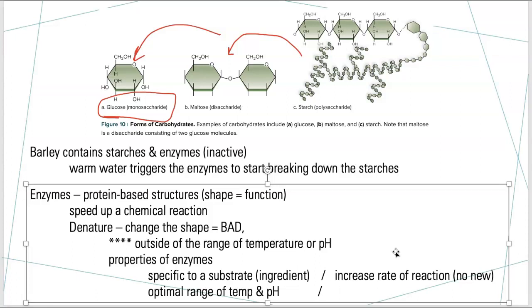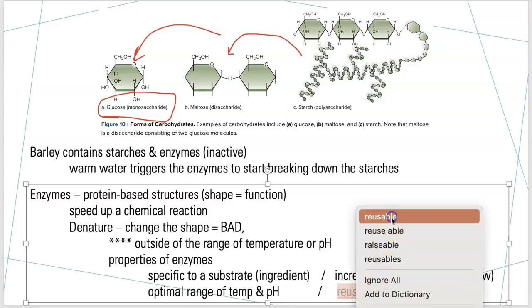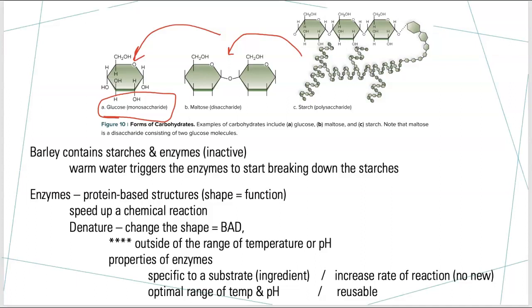And then the fourth key property is that enzymes are going to be reusable. So we can use them over and over and over, provided we didn't denature them. Reusable. So as long as we don't overcook or screw up the pH too much, that enzyme can keep working again and again and again and again for a long, long, long, long long time. So good to go, right? So let's make sure we don't denature our enzymes during any of this process.